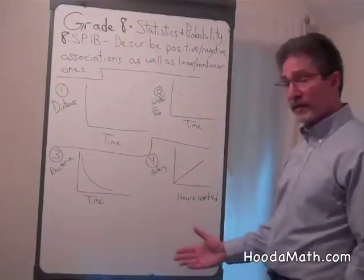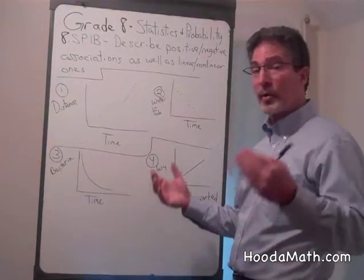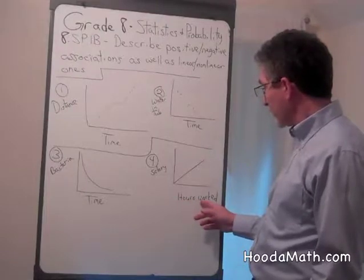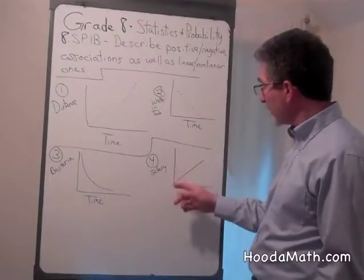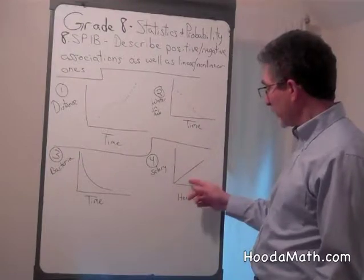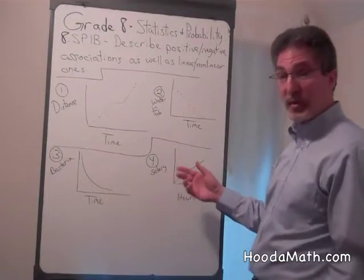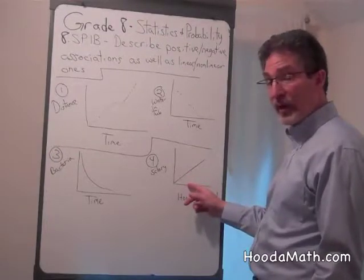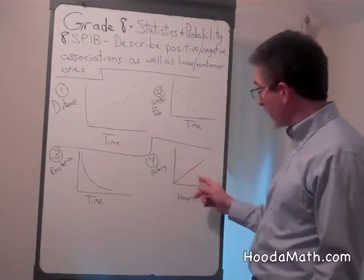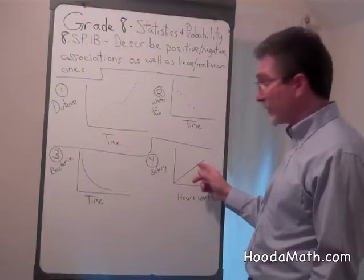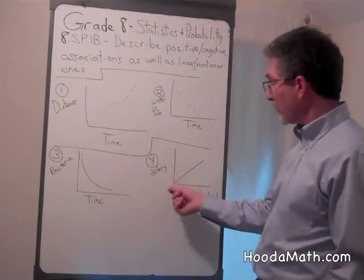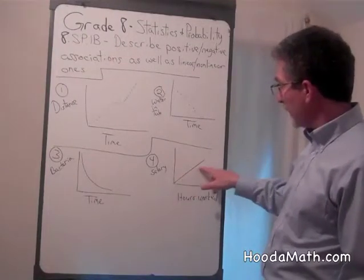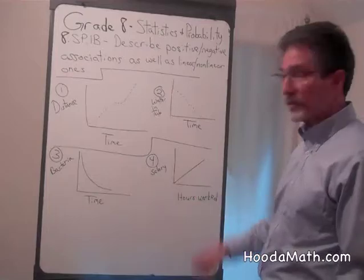And finally, if you were being paid for something per hour, as the hours you worked increased, the salary would increase in a linear way. If you were paid, say, eight dollars per hour — one hour would be eight dollars, two hours would be sixteen dollars, three hours would be twenty-four dollars. It would be linear, a constant rate. So you would get a straight line. This is a linear association.